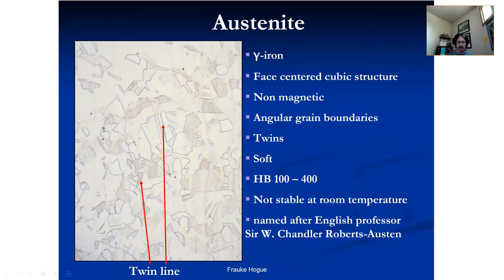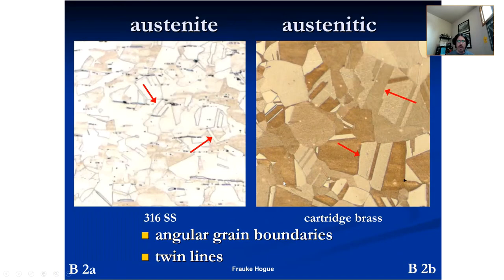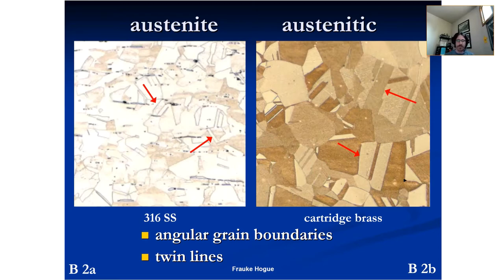Similar to ferrite versus ferritic: austenite is the phase we see in steel — for example, 316 stainless steel, where alloying elements preserve this phase of iron at room temperature. If we look at brass, we see a similar-looking microstructure, so we'd call it an 'austenitic' microstructure because it looks similar to austenite. So: ferrite/ferritic, austenite/austenitic. These angular grain boundaries — kind of sharp angles — and twinning are visible here in the microstructure.